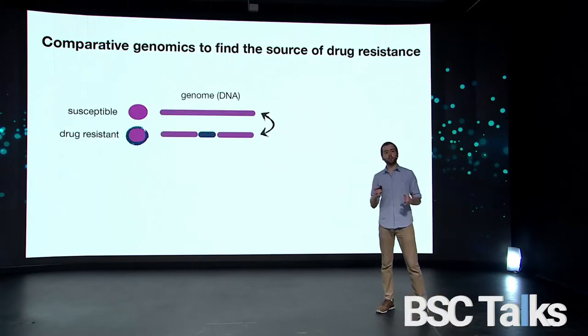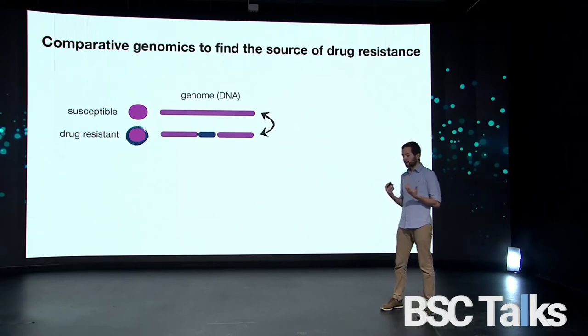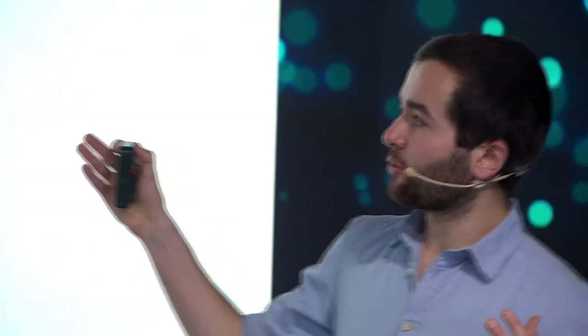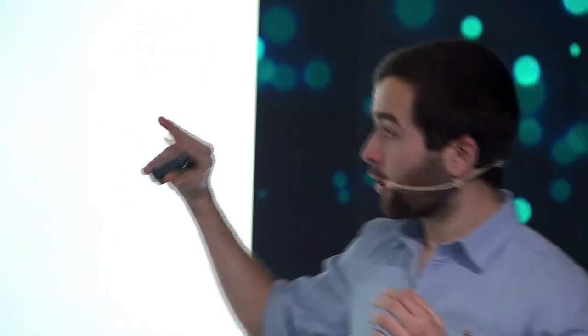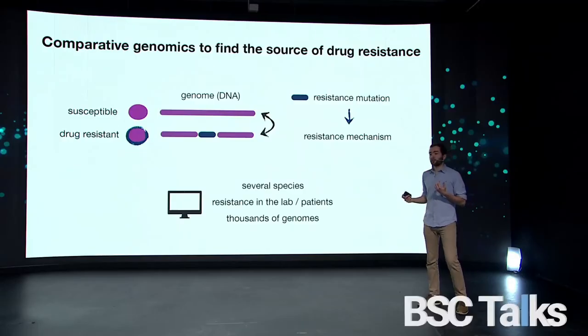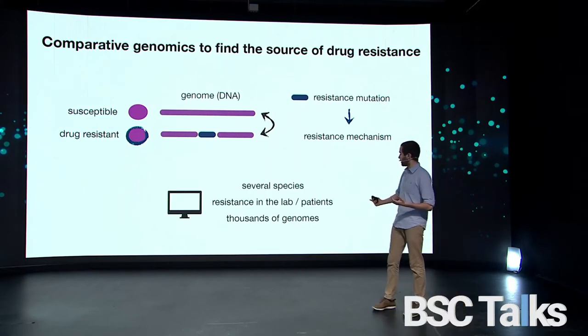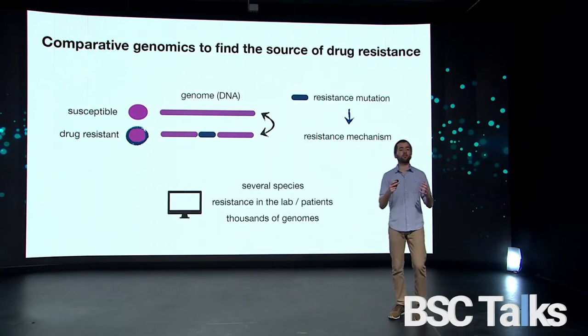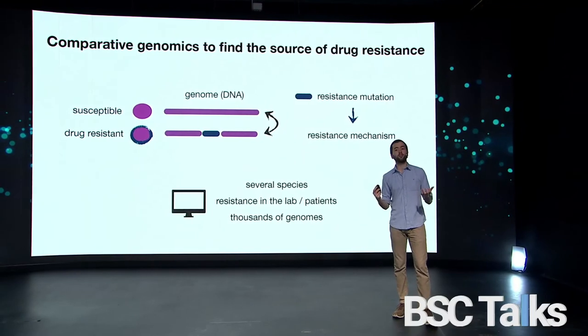We think that comparative genomics is a really nice way to find these mechanisms. Everything is related to the genome of these yeasts — the set of genetic material that each organism has. We think there are differences between susceptible and drug-resistant yeasts that can be related to drug resistance. So what we do is compare these genomes and try to find these differences — identifying resistance mutations that can be related to a resistance mechanism. We analyze yeasts made resistant artificially in the lab, but also those isolated from patients, involving thousands of genomes, which is why we use supercomputing facilities.